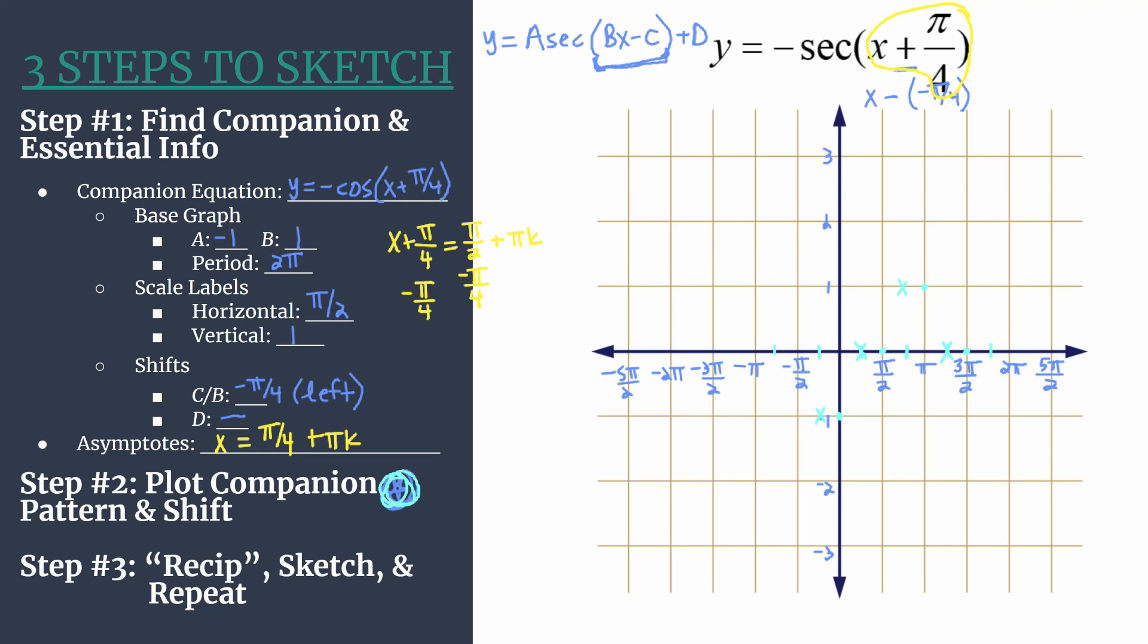We're ready for step 3, where we transform this into our secant graph. And so you just need to know how the points correspond to each other. I usually like to start at the original x-intercepts. So those were the second point and the fourth point that we filled in, respectively. So those turn into vertical asymptotes, because they were originally zeros. And when you try to take the reciprocal of a zero, you get something undefined. And those are denoted by vertical asymptotes. So we're putting those vertical asymptotes in.